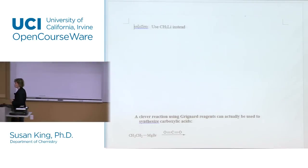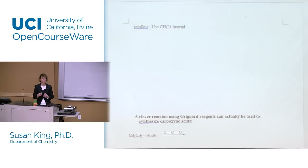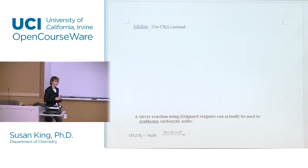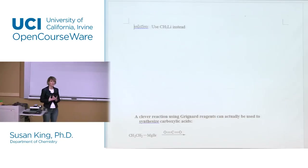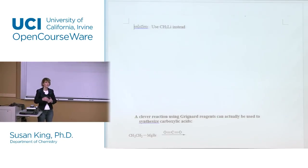We left off last time talking about Grignard reagents and we asked the question: do Grignards react with carboxylic acids? We said no, because the first thing that's going to happen is an acid-base reaction to deprotonate the carboxylic acid, and the Grignard is not powerful enough to add into the carboxylate.